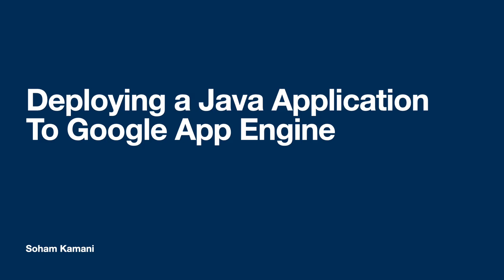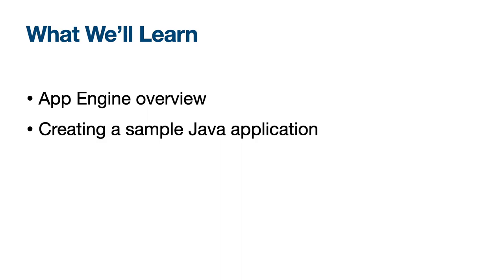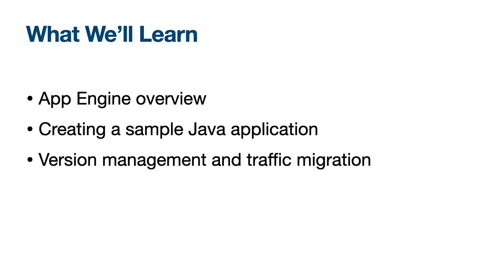Hey everyone, I'm Soham and today we learn how to deploy and run a Java Spring Boot application to Google App Engine. We'll start by getting an overview of the App Engine platform and what it does. We'll also create our first App Engine instance on the Google Cloud dashboard. Next, we'll look at a sample Java application and how we can deploy it to App Engine so that you can access it through a public URL. Finally, we'll see how we can manage different versions of our application and migrate traffic between them.